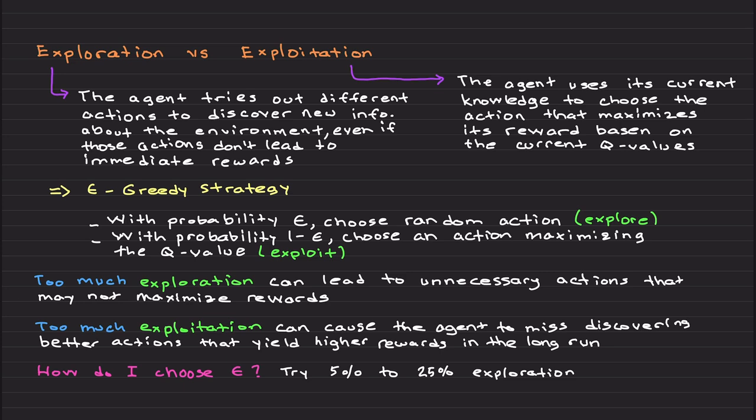Exploitation is basically the agent simply uses its current knowledge to choose an action that maximizes its reward based on the current Q values. This argmax Q(s,a) thing. And how we balance exploration and exploitation is using epsilon greedy strategy. Basically, what we're going to do is with some probability epsilon, we choose a random action. Let's say 25% of the time I will choose a random action. And for the rest of the time, with the probability of 1 minus epsilon, let's say 75% of the time, we choose an action that maximizes the Q value. We do exploitation.